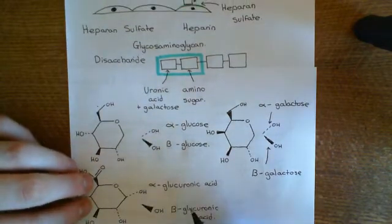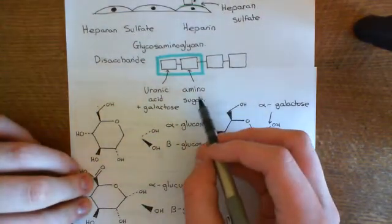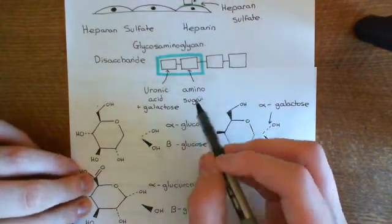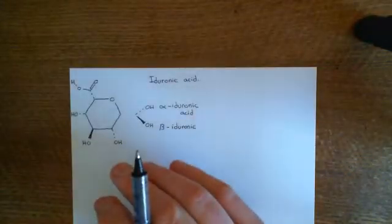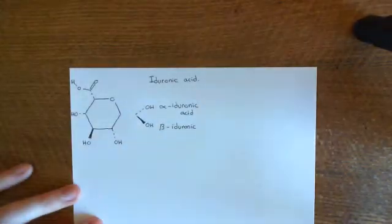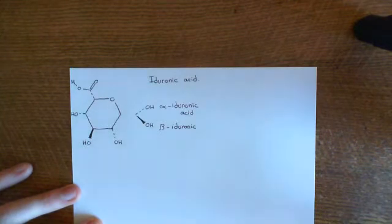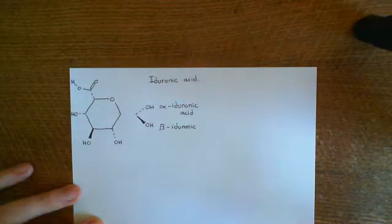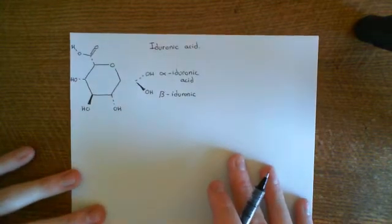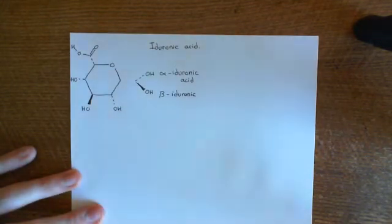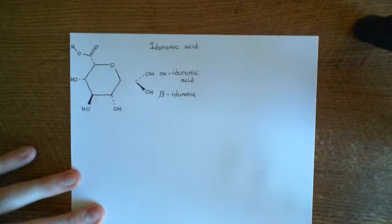Now let's turn our attention to the amino sugars. The amino sugars generally means N-acetylglucosamine or N-acetylgalactosamine. Let me show you the structures of N-acetylglucosamine and N-acetylgalactosamine.